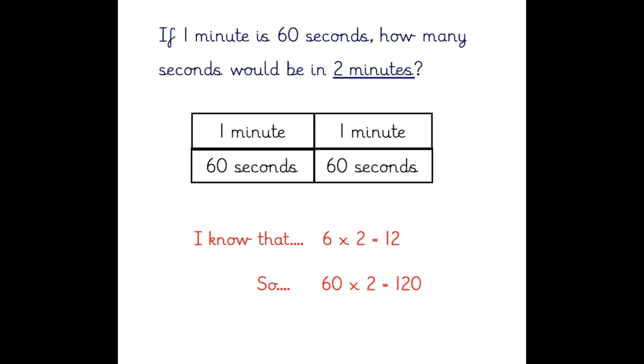If there are 60 seconds in one minute, how many seconds would there be in two minutes? We can use our bar model to help us demonstrate this. If we have two minutes, we also need two lots of 60 seconds. And if I know that six times two is 12, I also know that 60 times two is 120. So there are 120 seconds in two minutes.